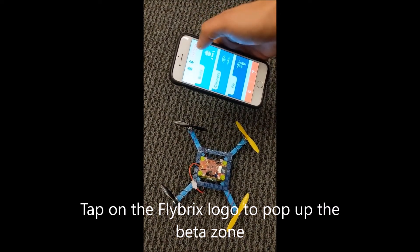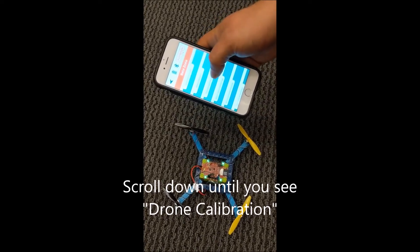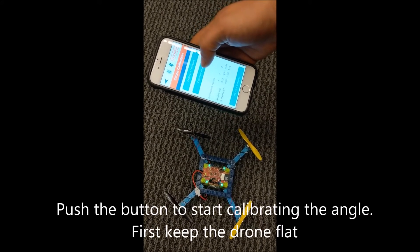We tap on the Flybricks logo to pop up the beta zone and you see drone calibration under the menu. You can see here where we can calibrate our compass or the angle, so we'll start by calibrating the angle.